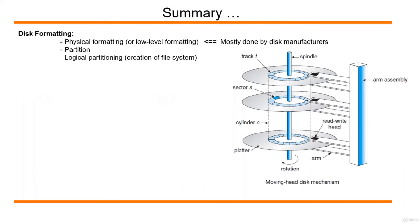To start with, in summary, the disk formatting process involves three major steps: physical formatting, which is mostly done in the disk manufacturing process; partition, which is under the supervision of the OS; and logical partitioning or creation of a file system. The OS always supervises this process. Let's look at some of the terminology we come across in disk formatting activity.